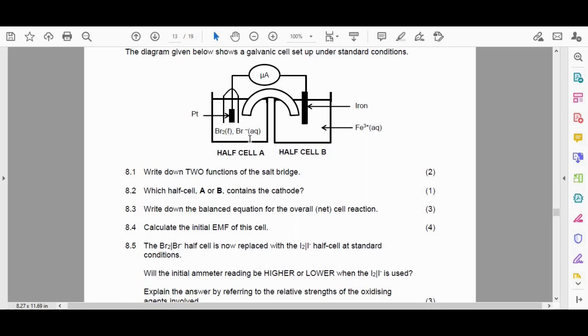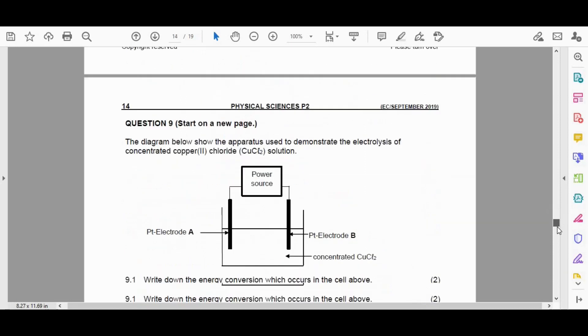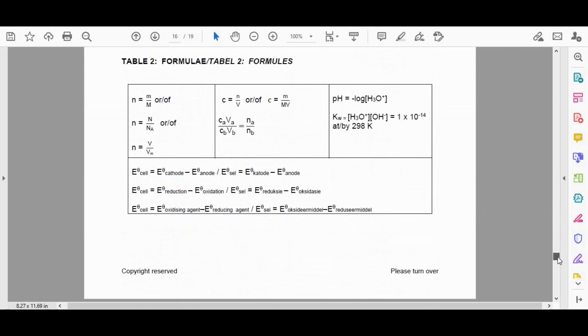Okay, because half cell A is our cathode. So we can definitely see that substance being reduced. Okay, so we have to go back to our table, and we have to go and find where is Br.